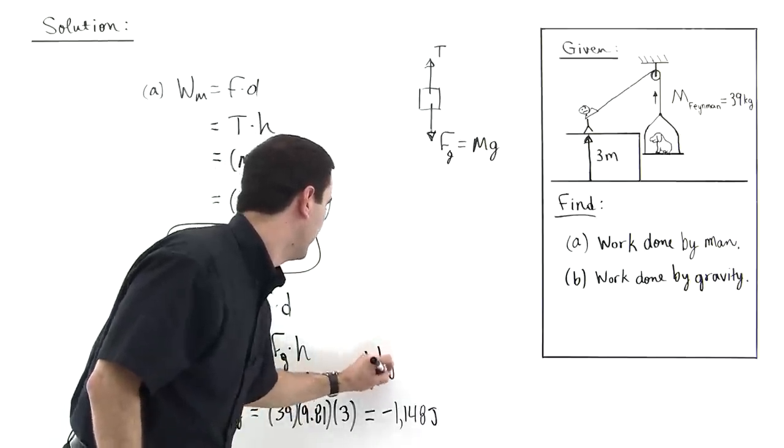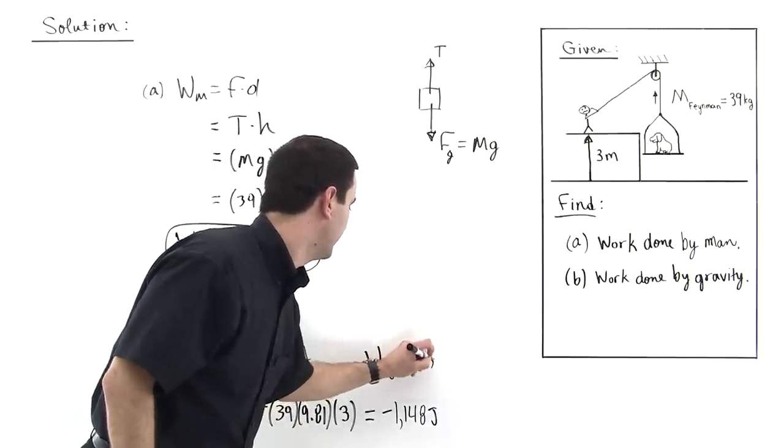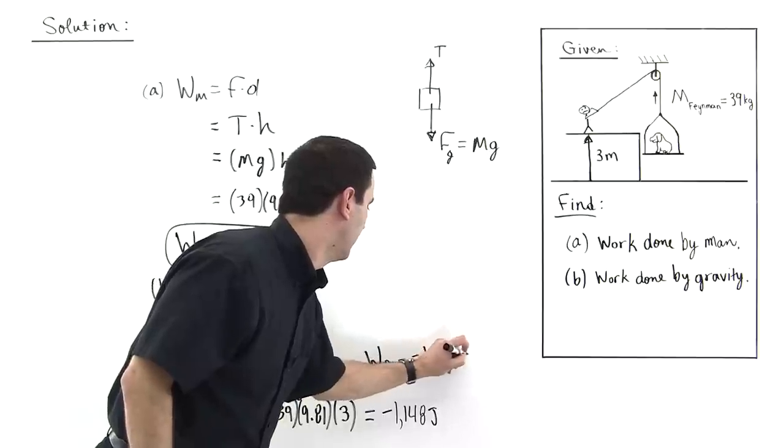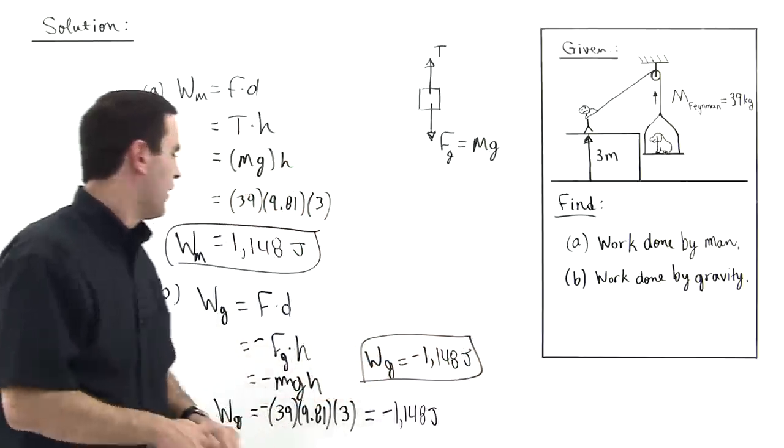So I'm going to just rewrite this right here. Work due to gravity is equal to negative 1,148 joules like this.